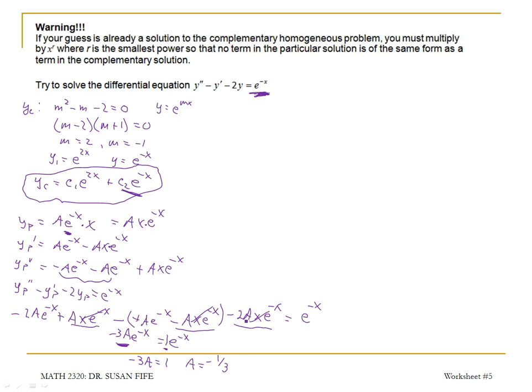So my particular solution YP has a coefficient of negative 1 third. It's going to be negative 1 third XE to the negative X.